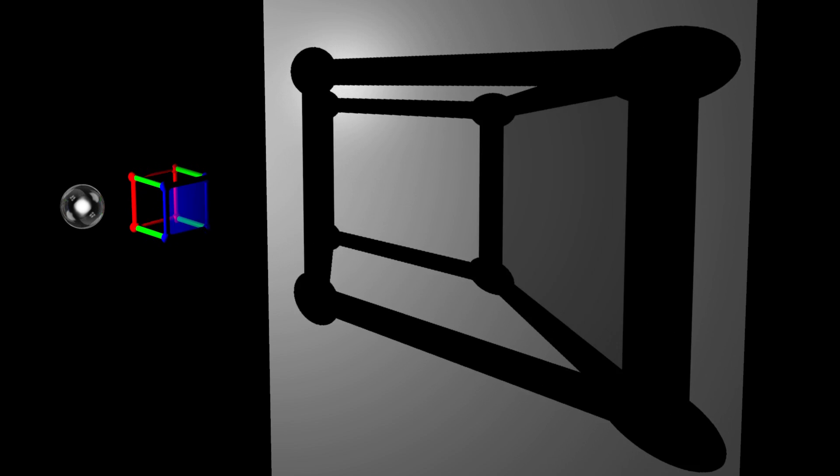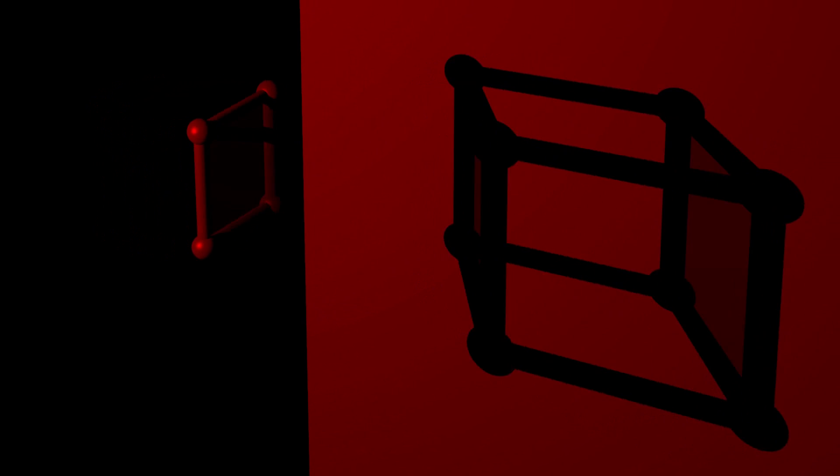Suppose we change the white light into a red light. Although the entire cube still casts the exact same shadow as before, only the red sections of the cube are able to reflect the red light. Therefore, only the red sections of the cube are now visible. All the other sections of the cube appear black because they absorb the red light.